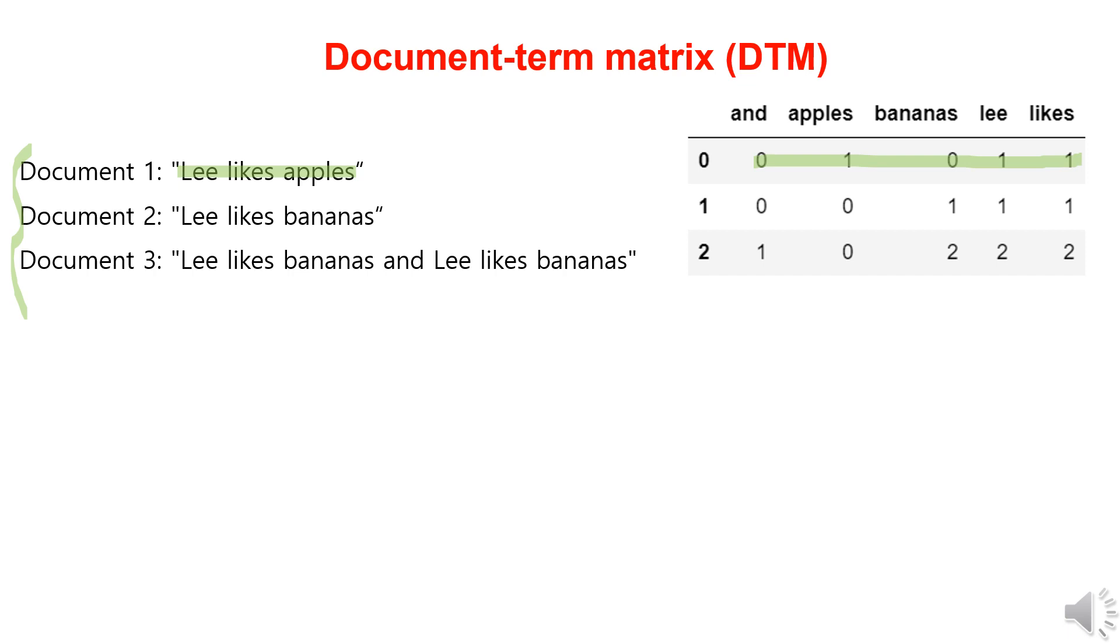For the second sentence: zero, zero, one, one, one. For the third sentence: one, zero, two, two, two.